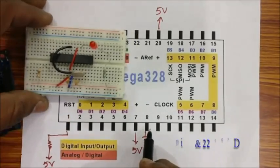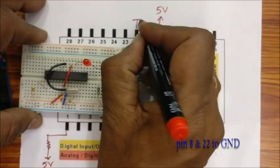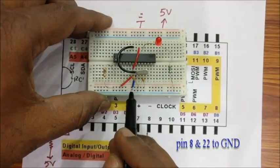Pin 8 and pin 22 are connected to ground. That is a black jumper wire you see on the breadboard.